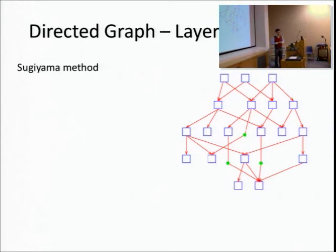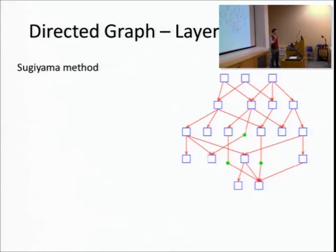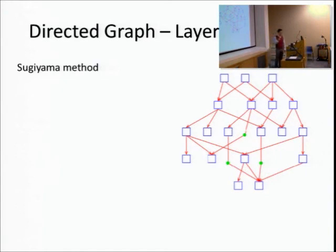Next I'll talk about layout for directed graphs. The most popular one is the layered layout. This is much more complex than the force-directed method - someone could write their own force-directed implementation in a day or two, but for this one you probably wouldn't even understand the algorithm itself in that time. This is sometimes called the Sugiyama method. Because it's so complex, the method is broken into steps, with optimization happening within each step rather than globally.